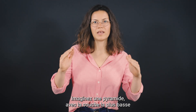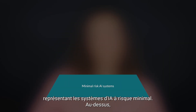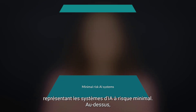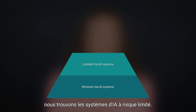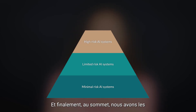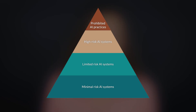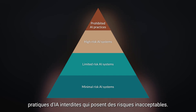Let's imagine a pyramid with the lowest tier representing minimal-risk AI systems. Moving up, we find limited-risk AI systems. Next, we have high-risk AIs. And finally, at the top, we have prohibited AI practices that pose unacceptable risks.